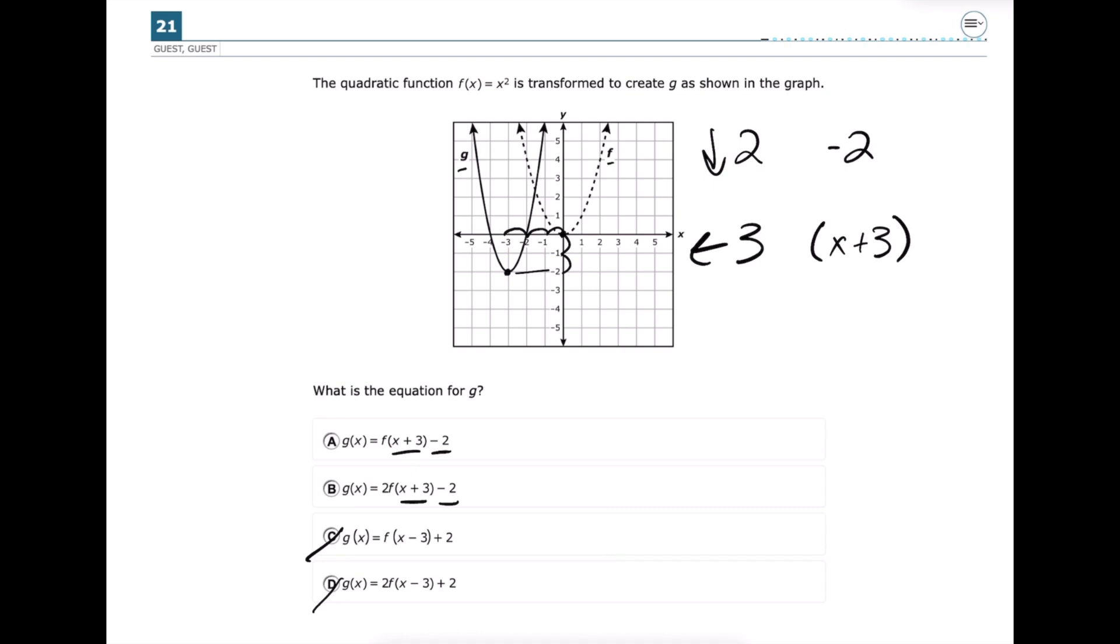We can see that originally it looks like a standard parabola, and then after it's transformed, it's a little bit more narrow in here. And so that is called a vertical stretch.